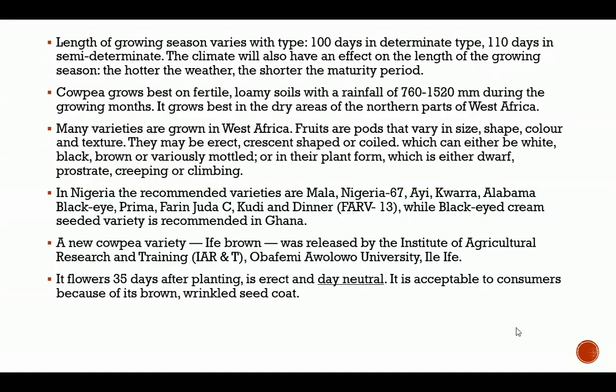Cowpea grows best on fertile loamy soils with rainfall of 760 to 1,520 millimeters during the growing months, and grows best in the dry areas of the northern parts of West Africa. When the weather is hotter, the time to attain the production stage is faster because there's enough sunshine to produce sufficient assimilates to trigger a reproductive stage of growth, and the pods tend to grow and mature faster.